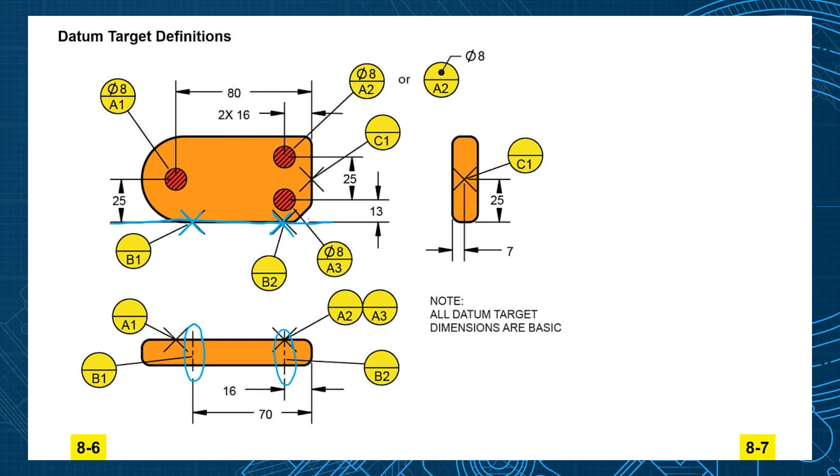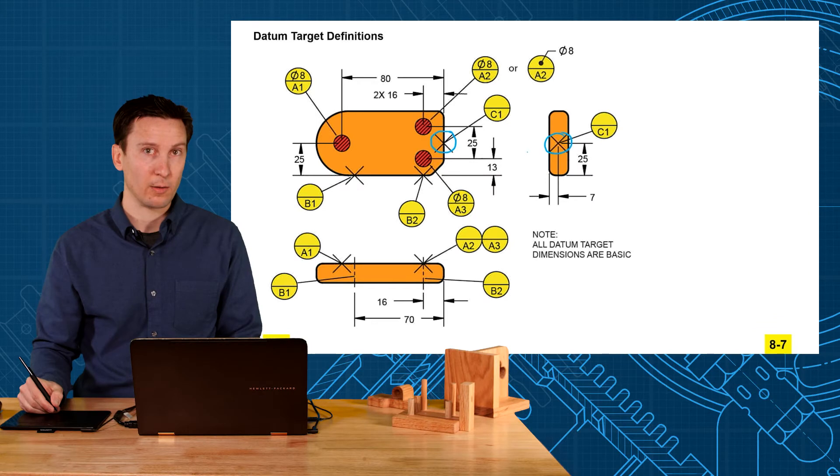Alright, so we got three for A, two for B, and then one for C. C is shown as an X in this view and it's shown as an X in this view. So what type of target would that be? A point.